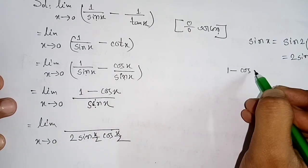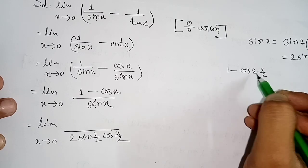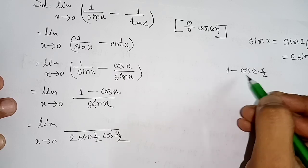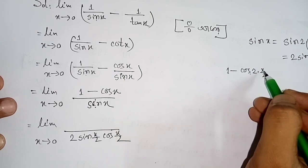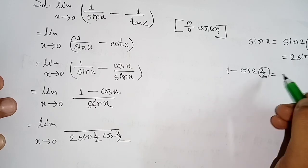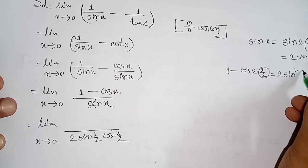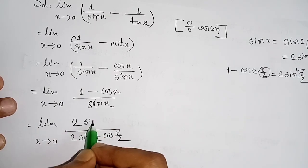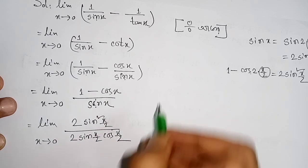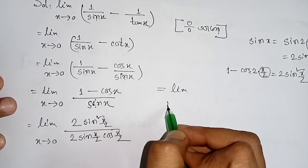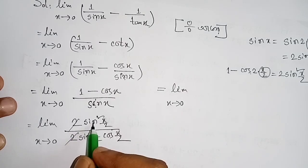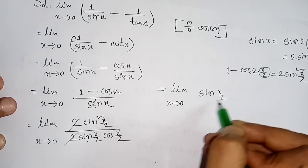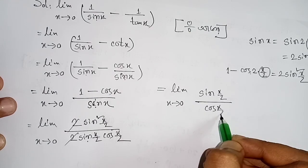We use 1 minus cosx = 2·sin²(x/2). So the expression becomes: limit x→0 of [2·sin²(x/2)] divided by [2·sin(x/2)·cos(x/2)]. The factor 2·sin(x/2) cancels from numerator and denominator.